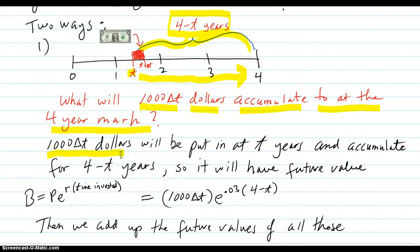A thousand delta T dollars will be put in at the T year mark and accumulate for four minus T years till the end. So we'll have a future value of, and this is where I was careful about how to say this, the balance will be the present value of when that was put in. It was put in at T. We're not talking about the present value, we're talking about principle here, put in at time T. So it'll be in there accumulating over the time invested, and that's the four minus T years. Here is your principle being put in there at the 0.03 rate for the remainder of the time until the four year mark, which is four minus T years.